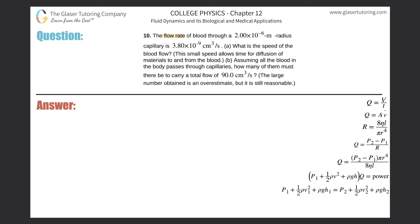Number 10, the flow rate of blood through 2 times 10 to the minus 6 meter radius capillary is 3.8 times 10 to the minus 9 cubic centimeters per second. Letter A, what is the speed of the blood flow? The small speed allows for diffusion of materials to and from the blood.